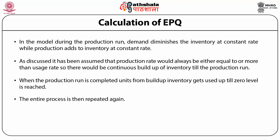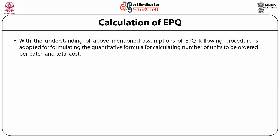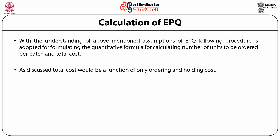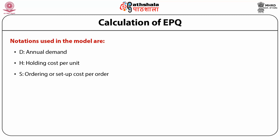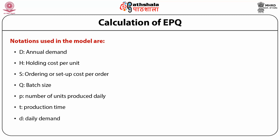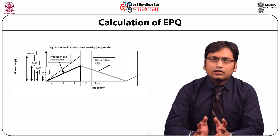The cycle is illustrated in Figure 1. The following procedure is adopted for formulating a quantitative formula for calculating the number of units to be ordered per batch and total cost. Total cost is a function of ordering and holding cost only. Notations used: D = annual demand, H = holding cost per unit, S = ordering or setup cost per order, Q = batch size, P = number of units produced daily, T = production time, d = daily demand.